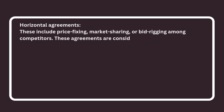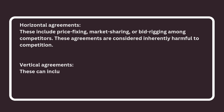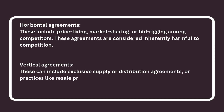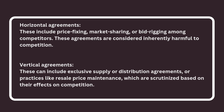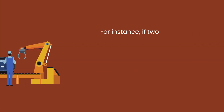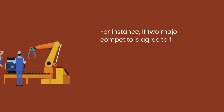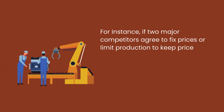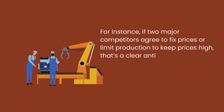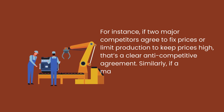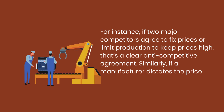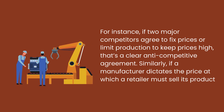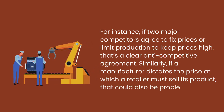Vertical agreements can include exclusive supply or distribution agreements, or practices like resale price maintenance, which are scrutinized based on their effects on competition. For instance, if two major competitors agree to fix prices or limit production to keep prices high, that's a clear anti-competitive agreement. Similarly, if a manufacturer dictates the price at which a retailer must sell its product, that could also be problematic.